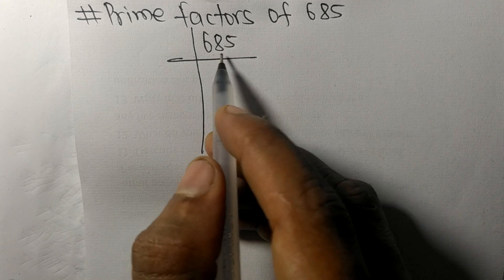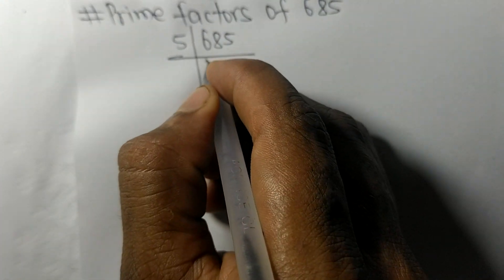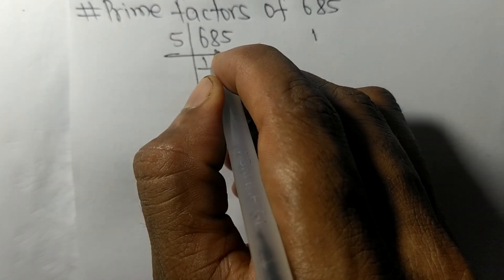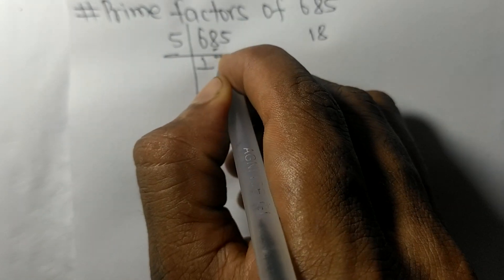5 times 1 means 5, remainder 1. And 18, 5 times 3 means 15, remainder 3.